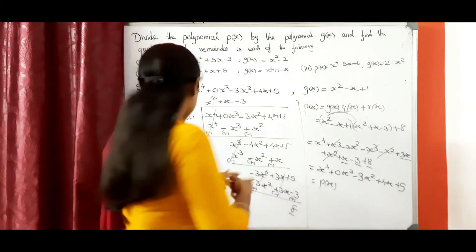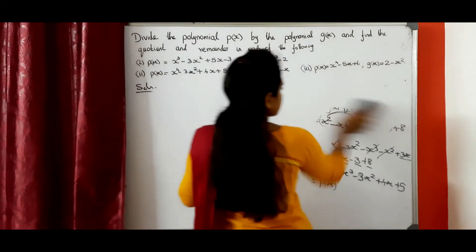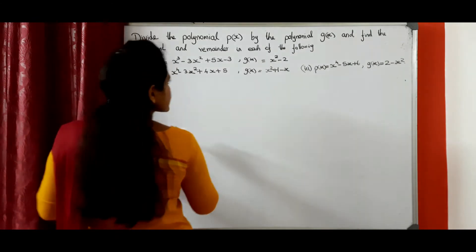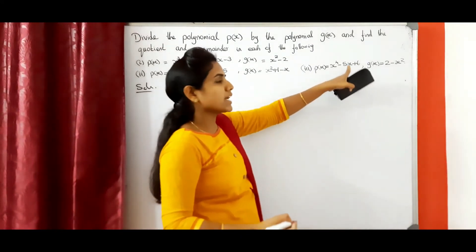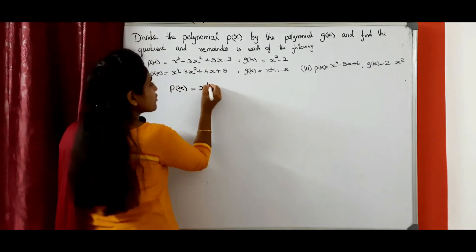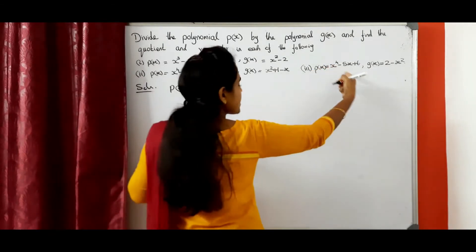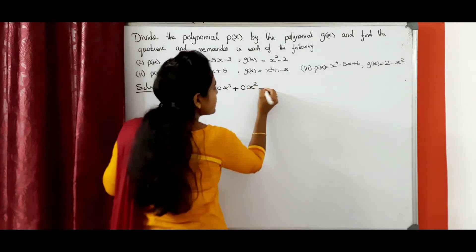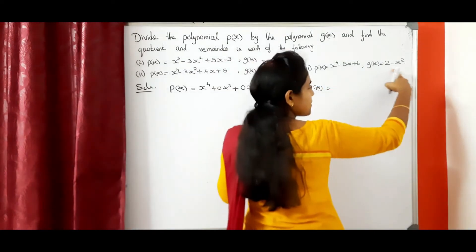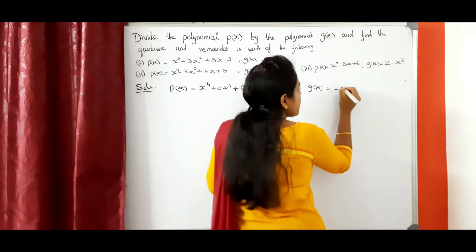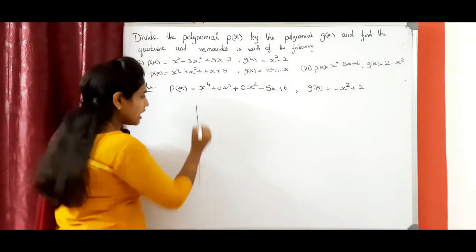Now we can move to the last problem. P of X: before doing the long division, first we need to arrange the polynomial properly. Any term not there means we need to apply 0. So X power 4 — cube term is not there, so I am applying plus 0 X cube. Square term also not there, so I am applying 0 X square. Then minus 5 X plus 6. G of X: we need to arrange it properly — first the square term, then only the constant term: minus X square plus 2.